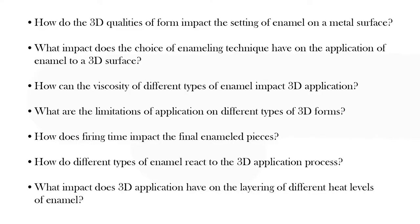Specifically, the things I wanted to study are the following questions: How do the 3D qualities of form impact the setting of enamel on a metal surface? What impact does the choice of enameling technique have on the application of enamel to a 3D surface? How can the viscosity of different types of enamel impact 3D application? What are the limitations of application on different types of 3D forms? How does firing time impact the final enamel pieces? How do different types of enamel react to the 3D application process? And what impact does 3D application have on the layering of different heat levels of enamel?